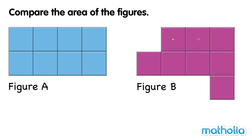In figure B, there are 1, 2, 3, 4, 5, 6, 7, 8 square tiles. Figure B also has an area of 8 square tiles.